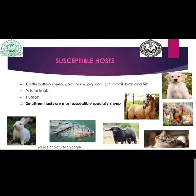Listeriosis can affect a wide range of animals including cattle, buffalo, sheep, goat, horse, pig, dog, cat, rabbit, birds, and fish. It can also affect wild animals and humans. Small ruminants like sheep are considered most susceptible to the disease.